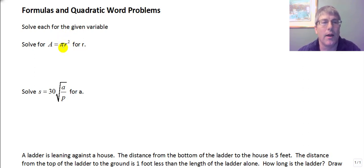We'll go ahead and divide both sides by pi, and we'll get r squared equals a over pi.